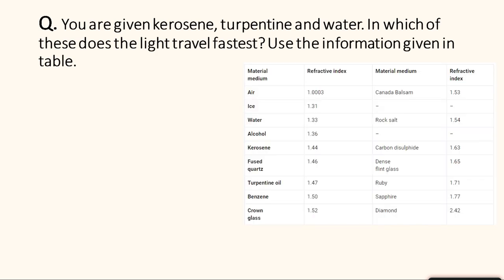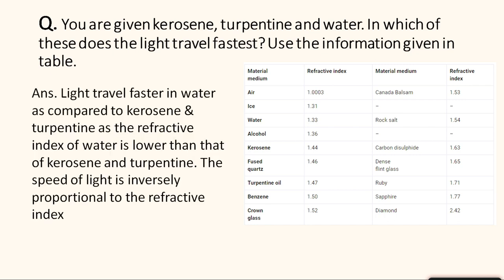Another question: Among kerosene, turpentine, and water, in which does light travel fastest? The most optically rarer medium allows the fastest travel. Looking at the refractive indices — water is 1.33, kerosene is 1.44, and turpentine is 1.47. Light will travel fastest in water because its refractive index is the lowest of the three. If the refractive index of a medium is the lowest, light travels fastest in it.